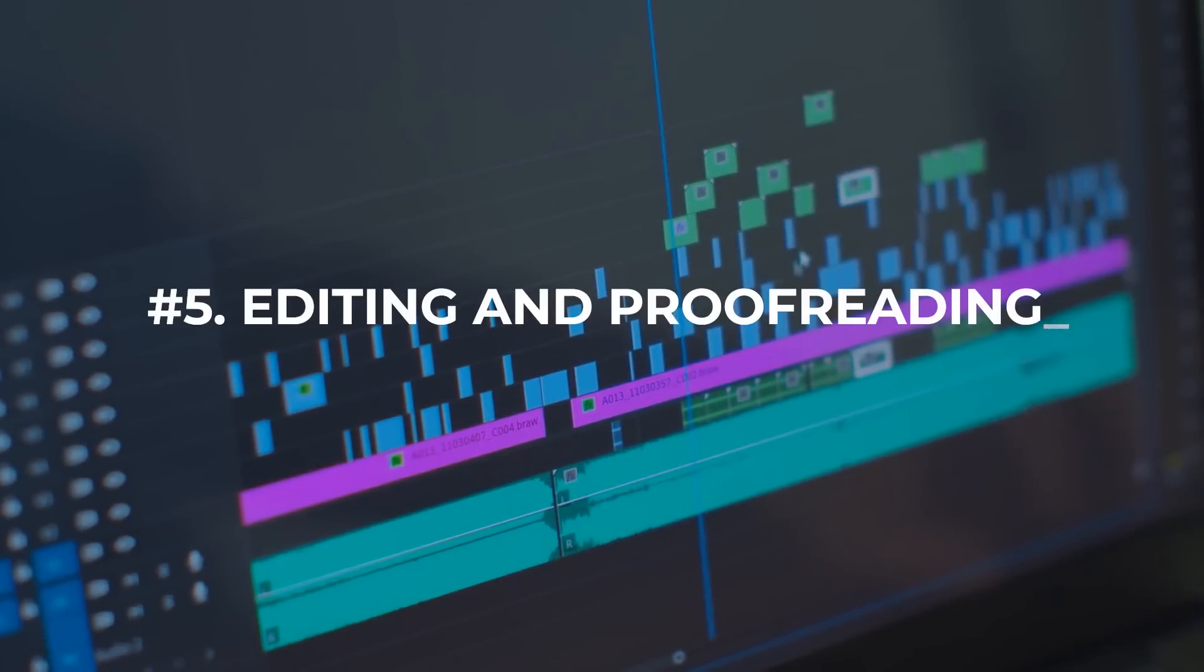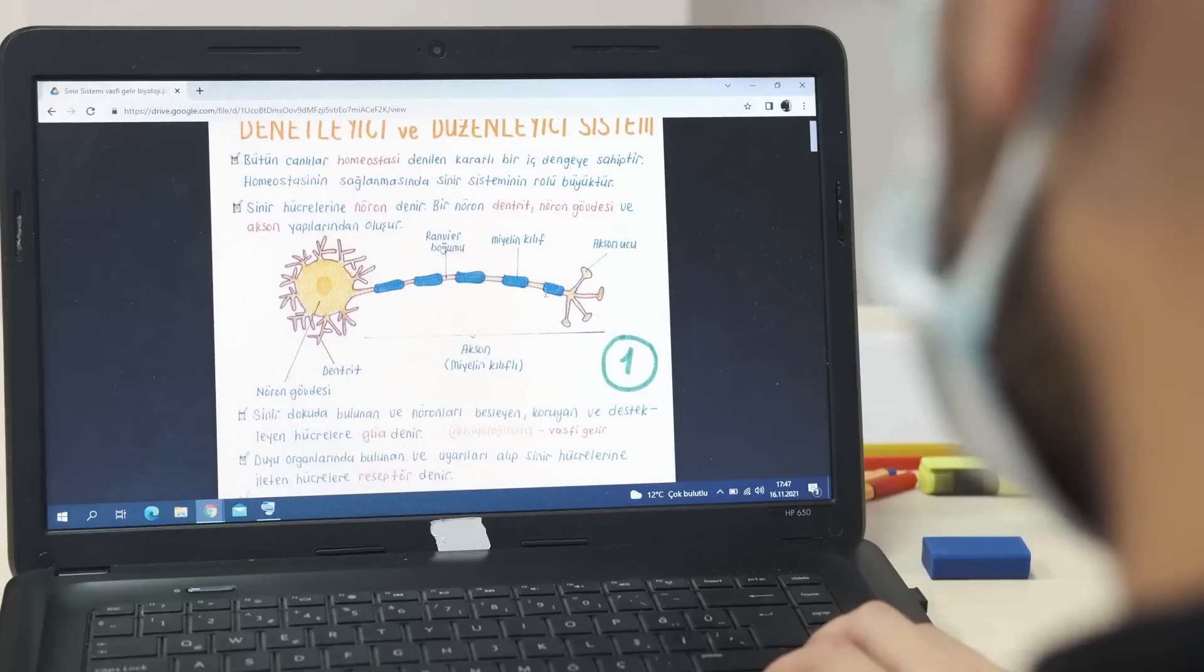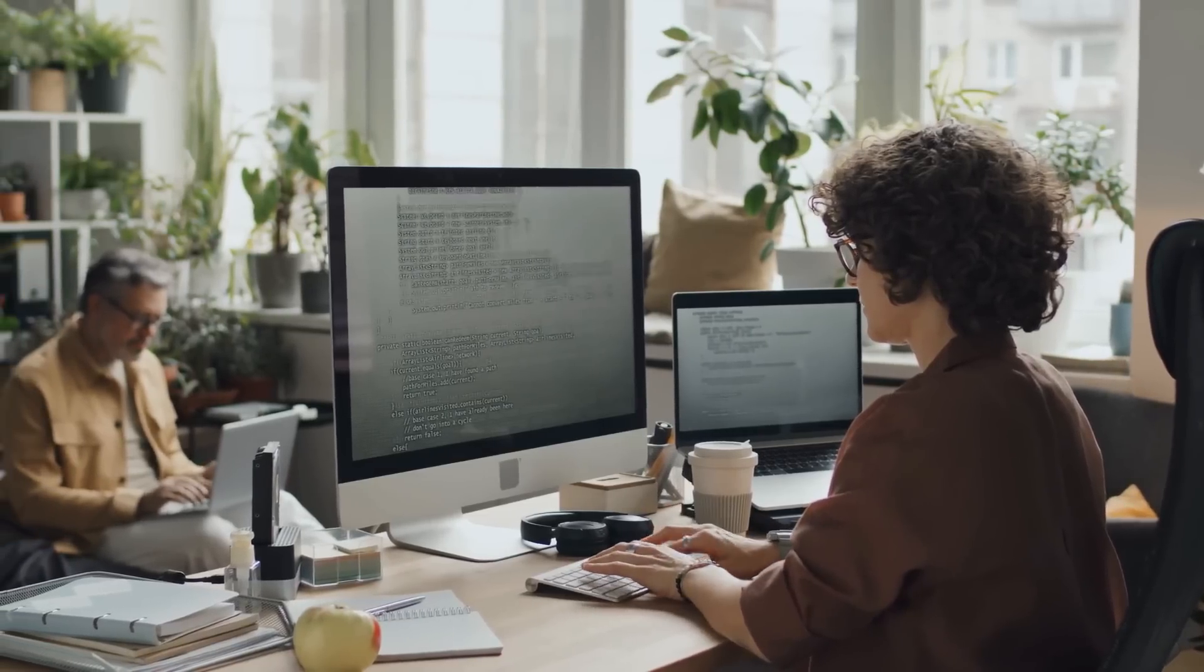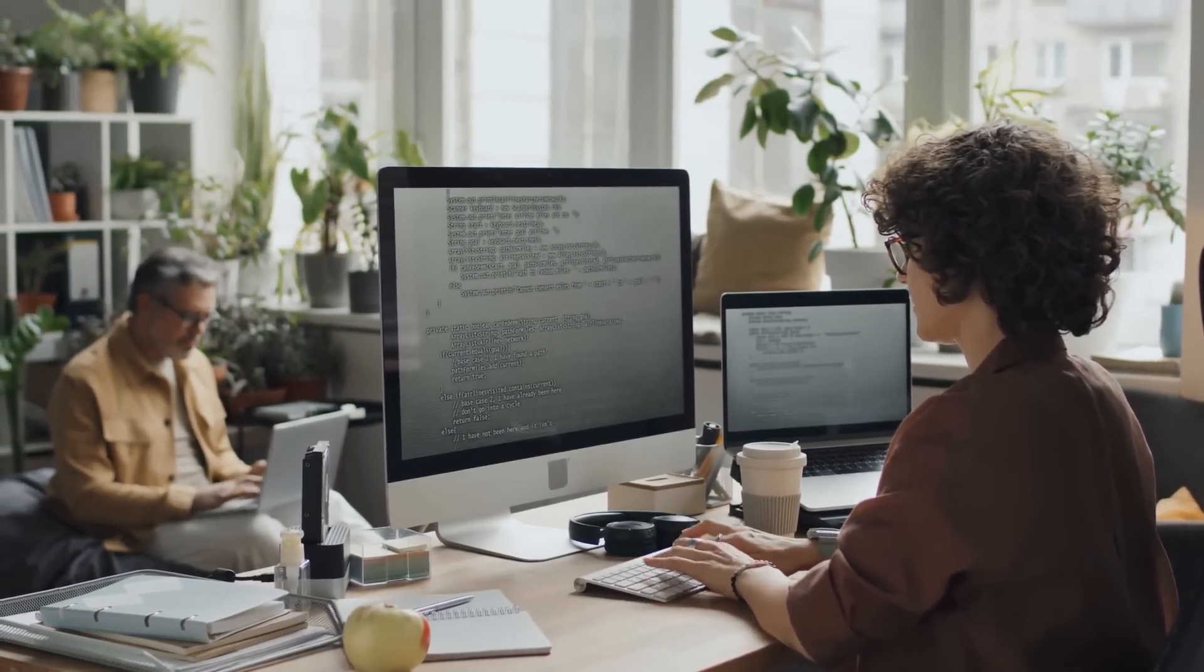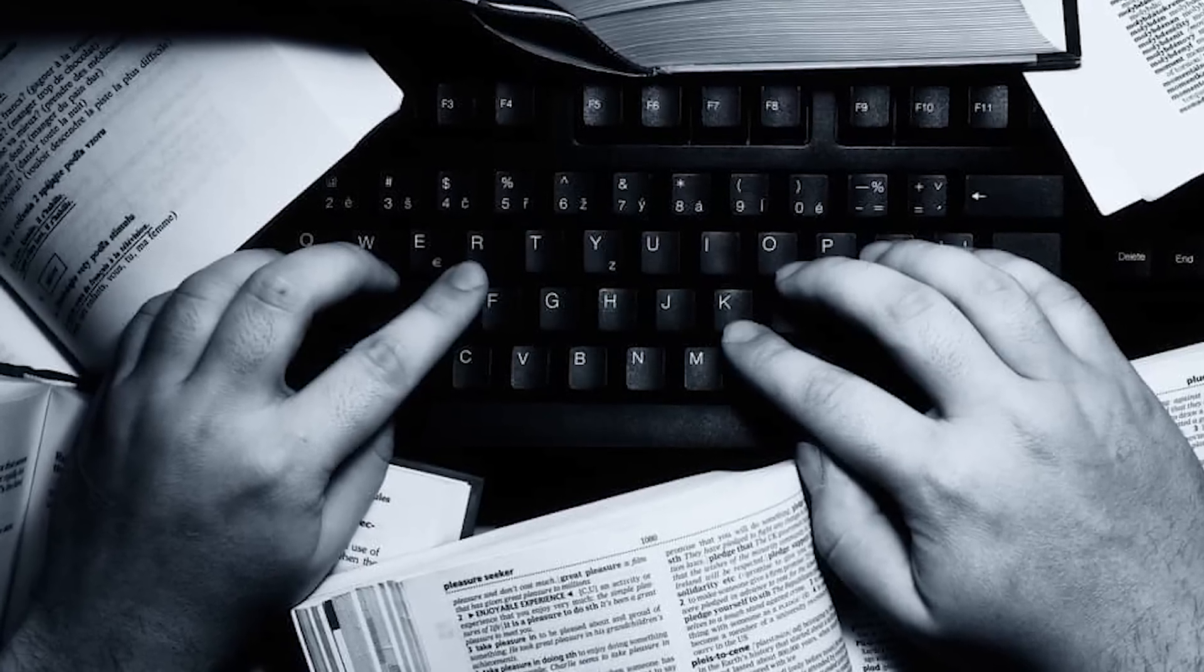Number 5. Editing and Proofreading. Editing and proofreading are crucial components of the writing process, ensuring that written content is clear, cohesive, and error-free. While both tasks involve improving the quality of a text, they differ in terms of complexity and scope.